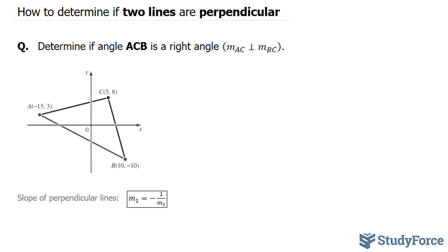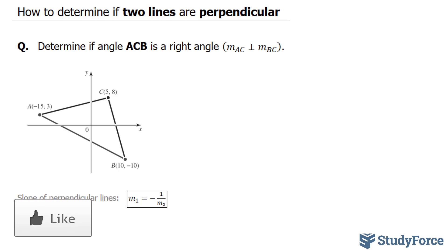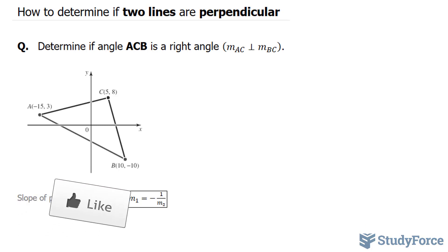To do this, we need to find out whether the slope of this line is the negative reciprocal of the slope for line CB. That means we need to find the slope for AC and BC separately. Let's go ahead and do that.